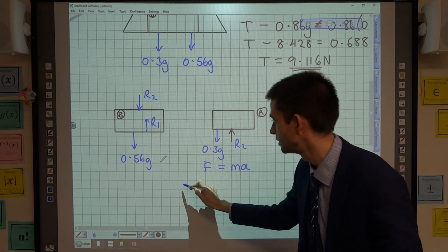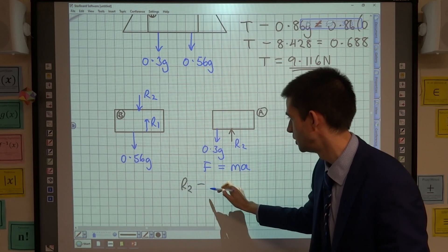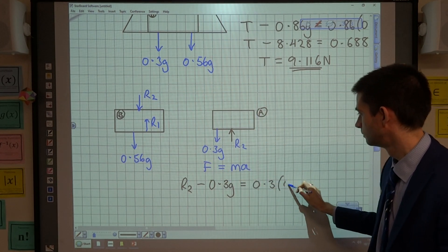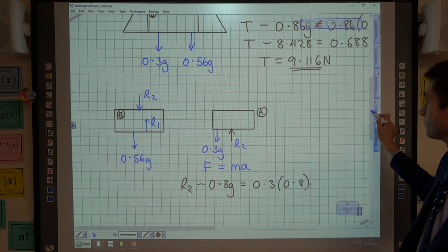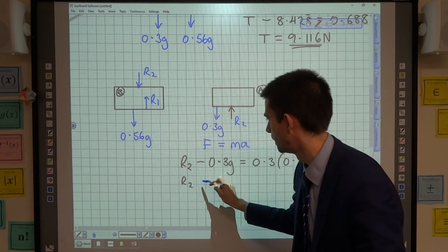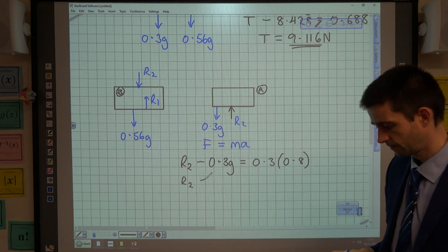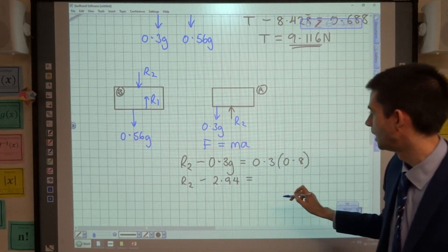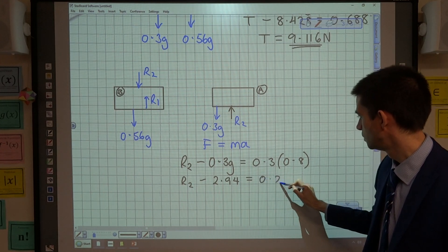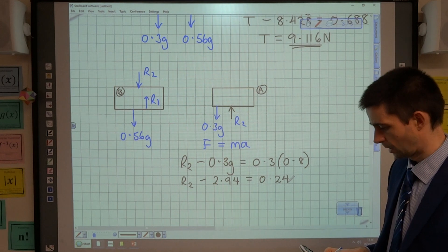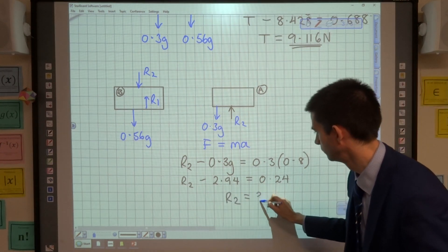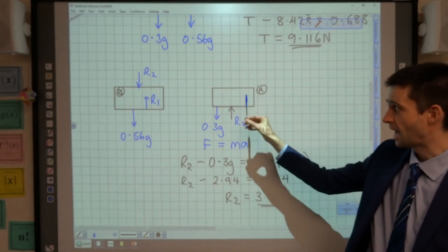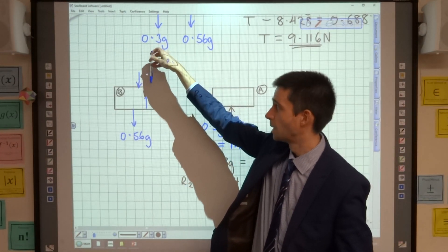So what I'm going to do is set up a resultant force equation. Resultant force equals mass times acceleration just for particle A. It's still accelerating upwards, so it's going to be the reaction that I've called R2 minus its weight, which is the force downwards, is going to equal its mass multiplied by its acceleration. So R2 minus 0.3 times 9.8, which is 2.94, is going to equal 0.24. And when I add that over, I get my reaction to be 3.18 newtons. Now that is the force being exerted by B on A, and it is also the force being exerted by A on B.